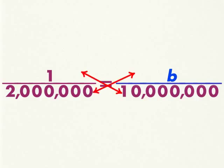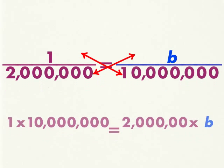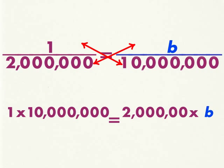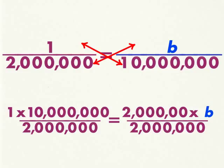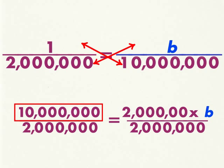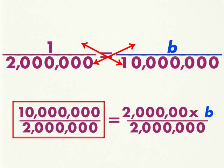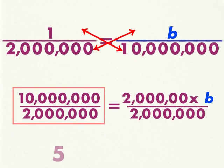The cross products of equivalent fractions are equal, so you can cross multiply. Next, divide both sides by 2 million to isolate the variable b. 1 times 10 million is 10 million, divided by 2 million is 5.